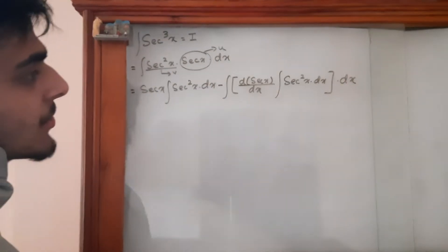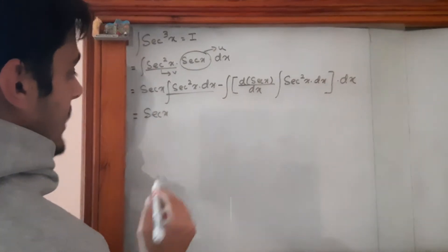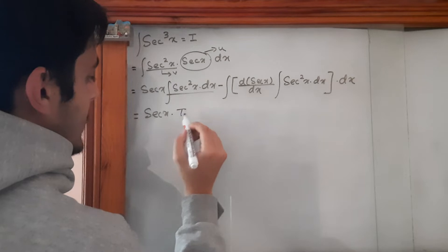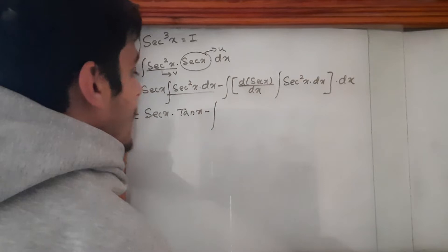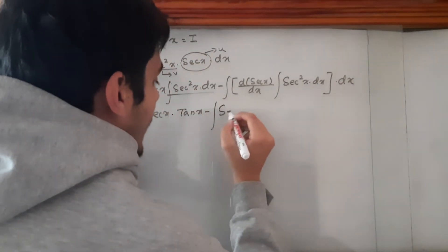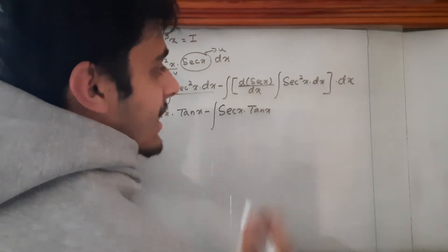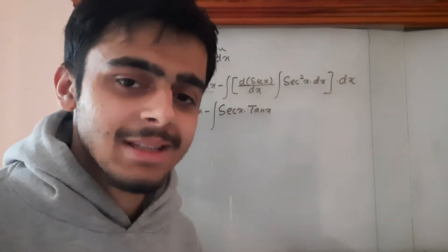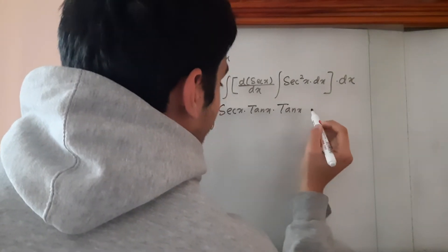Now we're going to write the integration of sec²x, which is simply tanx. So I = secx·tanx - ∫secx·tanx·tanx dx, where the derivative of secx is secx·tanx and the integration of sec²x is tanx.